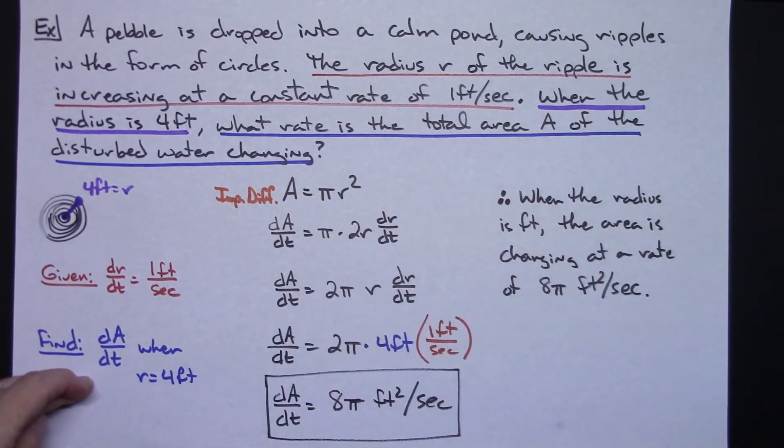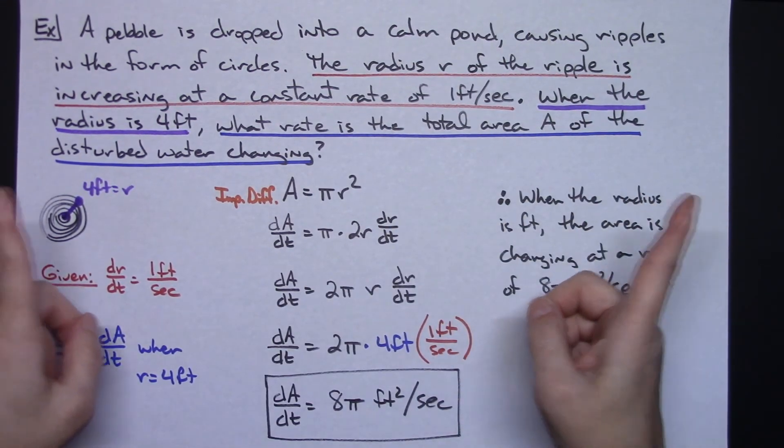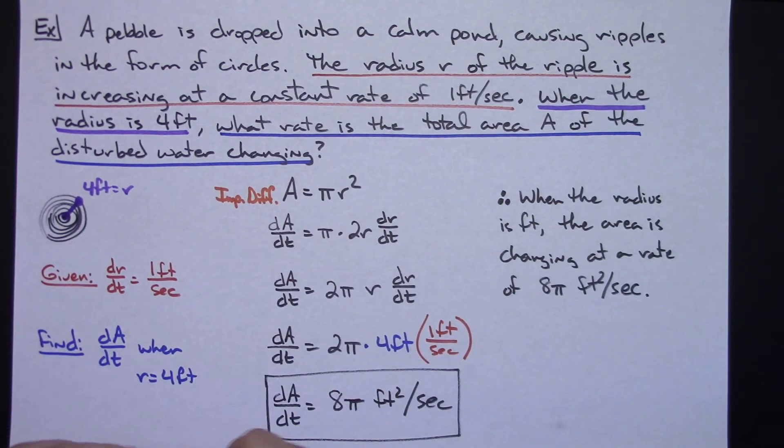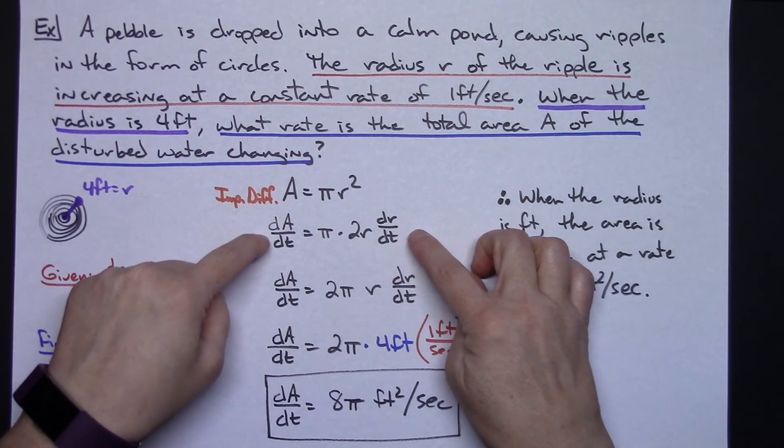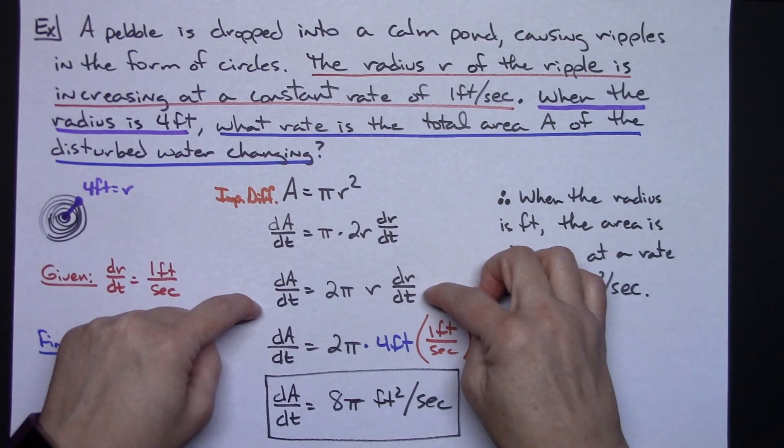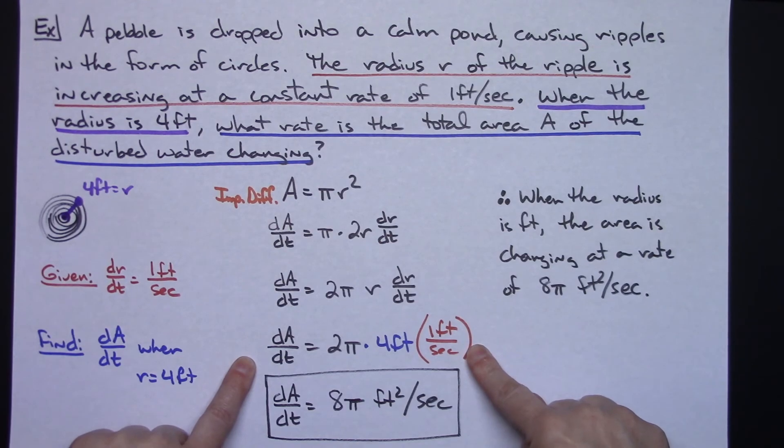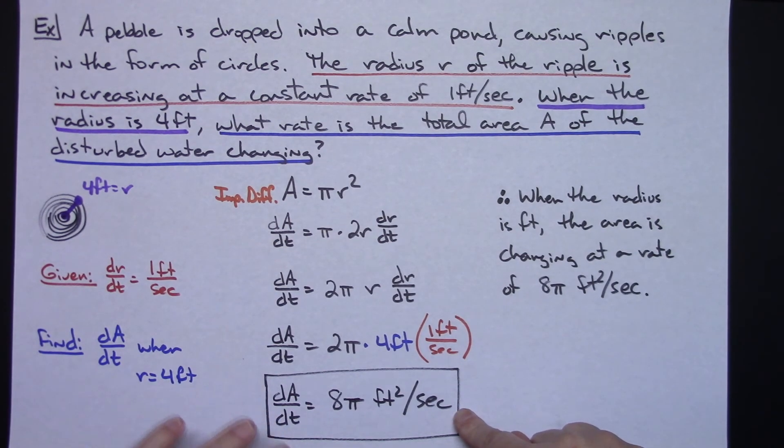General process: draw a picture if you can, figure out what you're given from the story problem, figure out what your find is, come up with the formula that you're going to need, the formula that's going to relate all the variables together of what you're dealing with. Differentiate with respect to time which would be implicit differentiation, plug in the values that you know and then simplify your equation and solve for your unknown.